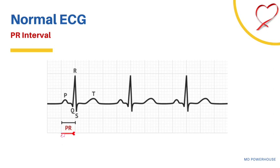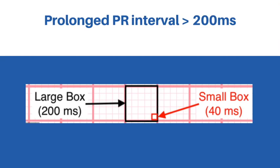In an AV block, you would expect to see a prolonged PR interval. A prolonged PR interval is greater than 200 milliseconds or greater than five small boxes. One small box is 40 milliseconds. So if you see an ECG with a PR interval greater than five small boxes or greater than one large box, then you should highly suspect an AV block.